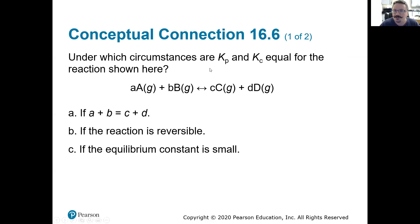Under which conditions or circumstances are K sub P and K sub C equal for the following reaction? So we have our stoichiometric coefficients, lowercase a, b, c, and d. A and b goes to form product C and d. And you'll notice everything is a gas. Is it when lowercase a plus b is equal to lowercase c plus d?